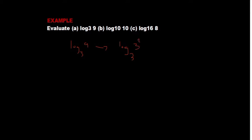From the power law we've looked at, the 2 can be dropped out front, giving us 2 times log base 3 of 3. We also discover a new law: whenever the base is equal to the number inside the log, it is equivalent to 1. So log base 3 of 3 equals 1, and therefore our answer is 2 times 1, which is 2.